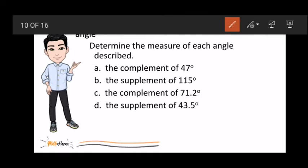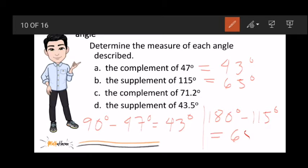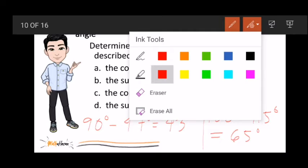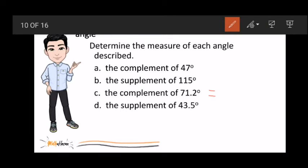Kind of effective to me. If we need to determine the measure of each angle described, the complement of 47 degrees is 43 degrees. Why? Because 90 degrees minus 47 degrees is 43 degrees. Now, the supplement of 115 is 65 degrees. Since it's supplement, I need to subtract 115 from 180 degrees. So, by doing this, we'll have 65 degrees. And how about the complement of 71.2 degrees? The complement is 18.8 degrees by subtracting 71.2 from 90 degrees. And since this is supplement, it's subtracted to 180 degrees. And the answer is 136.5 degrees.